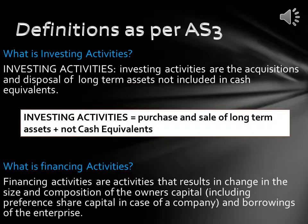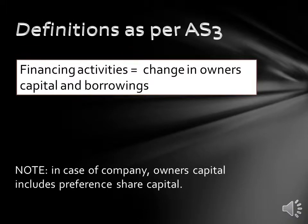What is investing activities? Investing activities are the acquisitions and disposal of long-term assets not included in cash equivalents. So: Investing Activities = Purchase and sale of long-term assets + Not cash equivalents. What is financing activities? Financing activities are activities that result in change in the size and composition of the owner's capital, including preference share capital in case of a company, and borrowings of the enterprise. So: Financing Activities = Change in owner's capital and borrowings. In case of a company, owner's capital includes preference share capital.